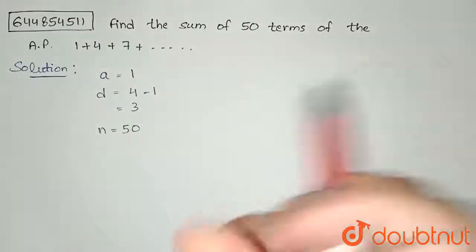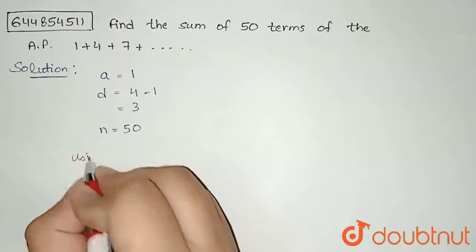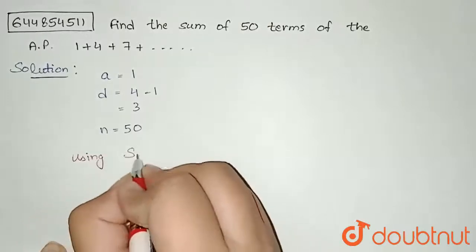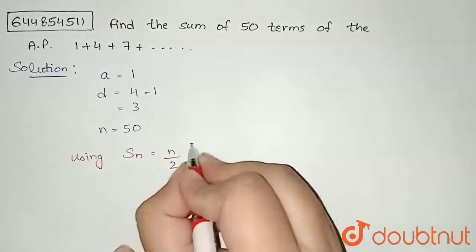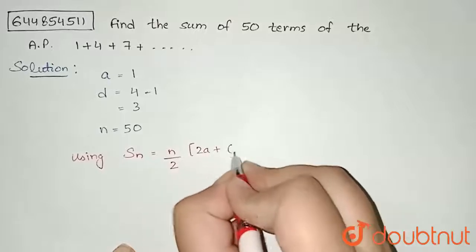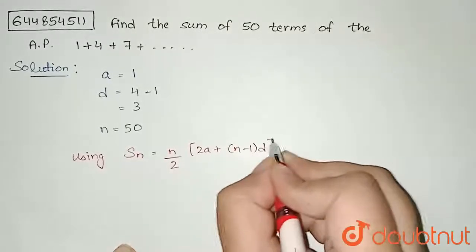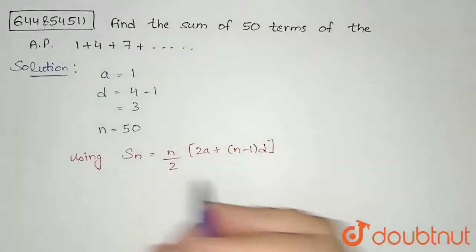Now by using the formula for the sum of N terms of an AP, SN equals N by 2 into 2A plus N minus 1 into D. I have all the unknowns here.